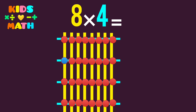We count: 1, 2, 3, 4, 5, 6, 7, 8, 9, 10, 11, 12, 13, 14, 15, 16, 17, 18, 19, 20, 21, 22, 23, 24, 25, 26, 27, 28, 29, 30, 31, 32. So 8 times 4 equals 32.